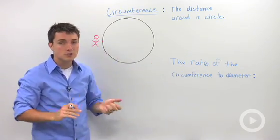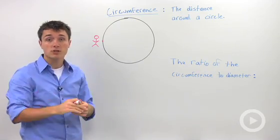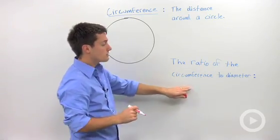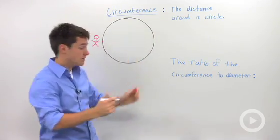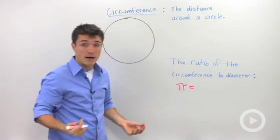There's a special ratio that the ancient mathematicians found of circumference to diameter. So that's what we're going to use to describe circumference. And that ratio was pi.